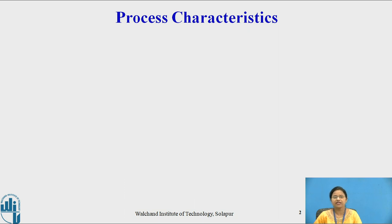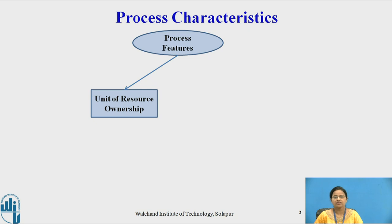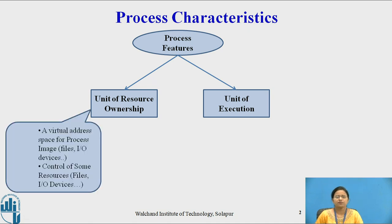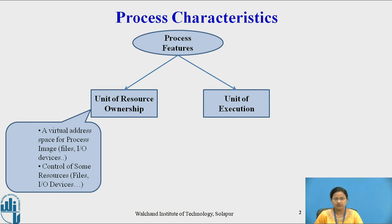Let us see fundamental process characteristics. A process has two features: unit of resource ownership and unit of execution. In unit of resource ownership, a process includes a virtual address space for process image, for example, files or I/O devices. The operating system also gives protection to the process from input-output devices or from some external resources.